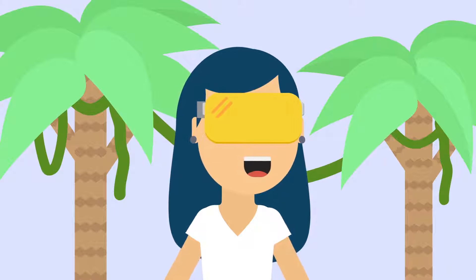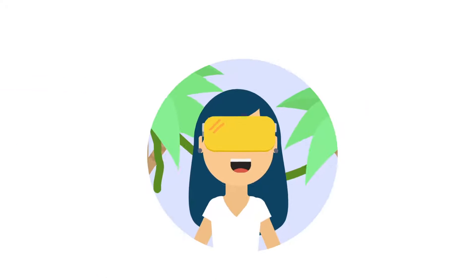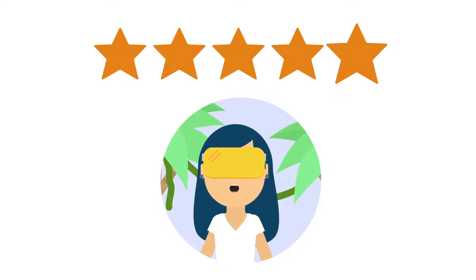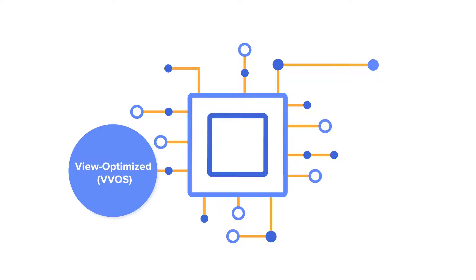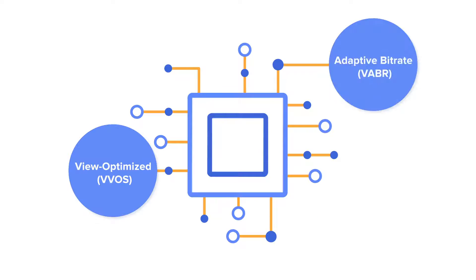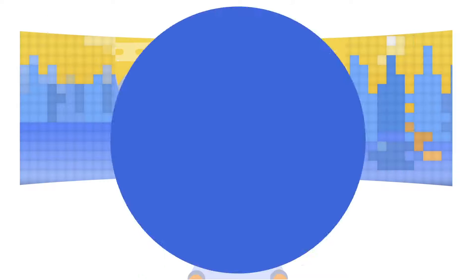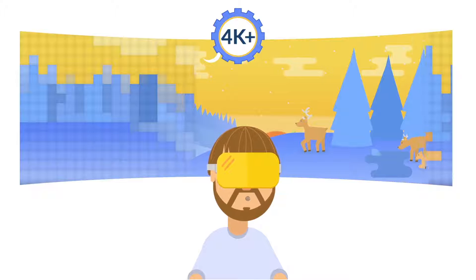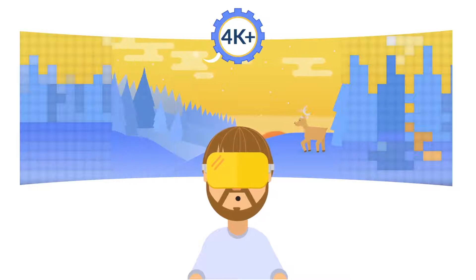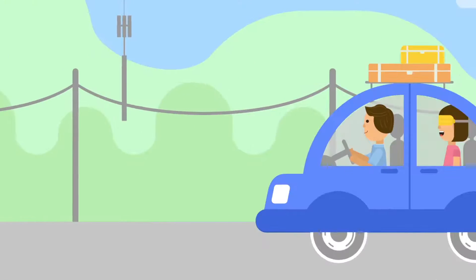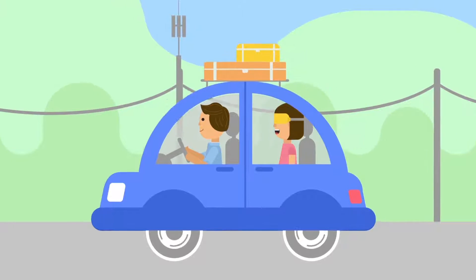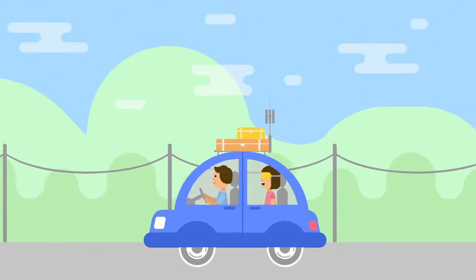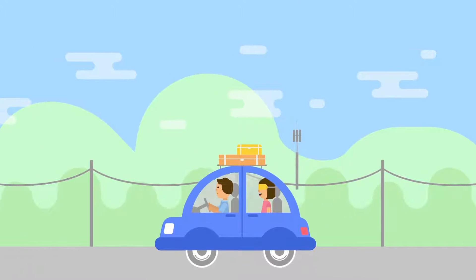Visbit also significantly improves the VR video viewing experience, leaving your users happy. Our proprietary view-optimized streaming and adaptive bitrate streaming technologies enable your app to smoothly stream and play 4K and above resolution 360-degree VR videos. Your videos can even be streamed over LTE without heavy compression or noticeable latency.